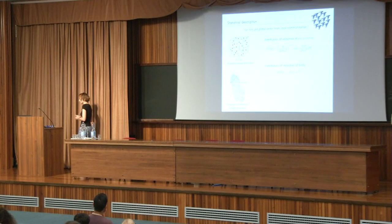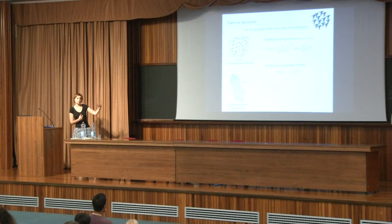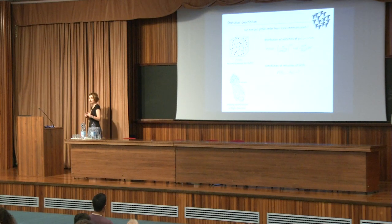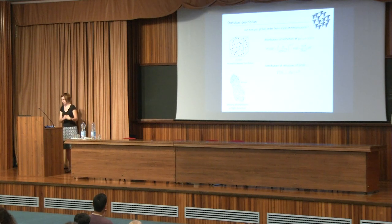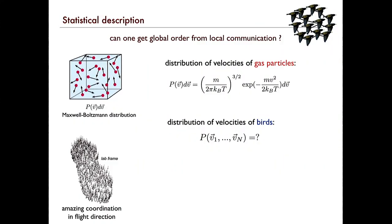We are going to analyze the results of these very hard experiments. Stefania tomorrow will tell you more about midges and how hard it is to acquire this data — it's very non-trivial. I'm just going to come in at the point where I already have these velocity vectors and I want to understand this system. The question we're trying to get at: how do we get this global order?